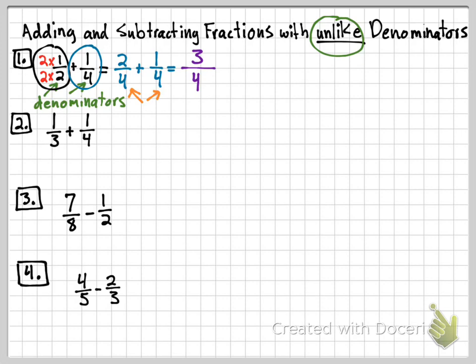You change the denominators by multiplying. For number two, we see that that's a three and that's a four. This one's a little bit different because I'm going to have to multiply both of them — both the three and the four — by a certain number. The goal is to get the denominators to be the same. If I multiply the four by three, four times three equals 12, and if I multiply the three by four, that's equal to 12 also.